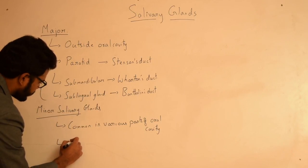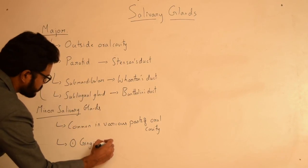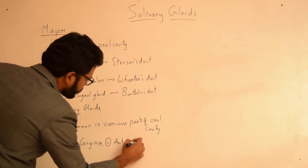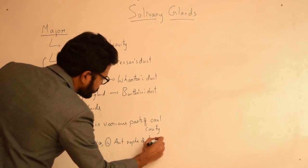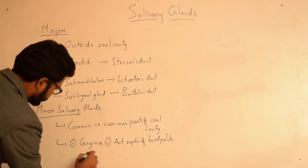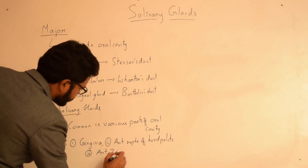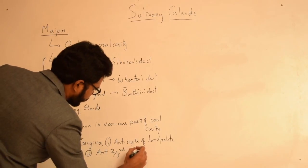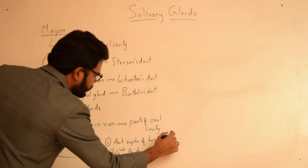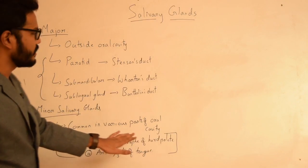Minor salivary glands are absent in: first, the gingiva; second, the anterior raphae of the hard palate; and third, the anterior two-thirds of the tongue. These are very important — minor salivary glands are absent in these anatomic regions.